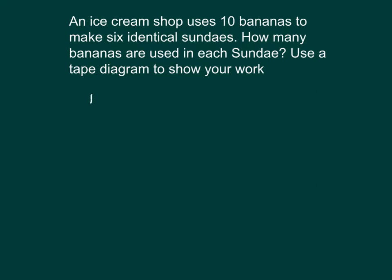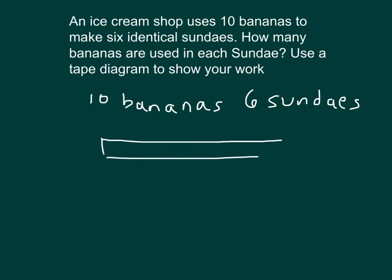Things that I know are that there are ten bananas for six sundaes. So I'll go ahead and write that out. So those ten bananas are split amongst six sundaes using a tape diagram. The tape diagram represents the whole and it represents the ten bananas. And I know that I'm splitting up those ten bananas amongst six sundaes. So I will divide this fraction bar into six parts.